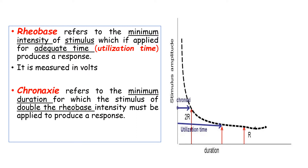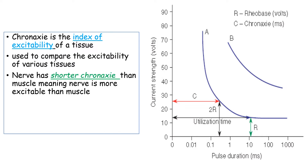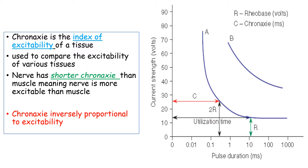Chronaxy is the duration — specifically the minimum duration for which a stimulus of double the intensity of rheobase is applied to produce a response — and it is measured in milliseconds. Chronaxy is an index of excitability of the tissue. Among nerve and muscle, the more excitable one is the nerve. Chronaxy is inversely proportional to excitability, and nerve has a shorter chronaxy compared to muscle, meaning nerve is more excitable than muscle.